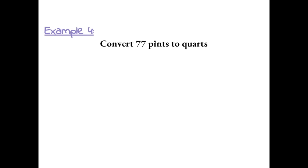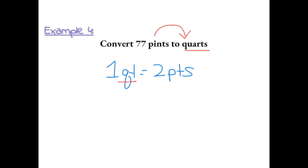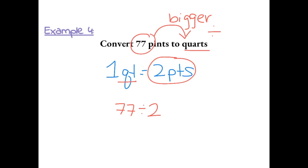Example 4: Convert 77 pints to quarts. We know that 1 quart is equal to 2 pints, so quarts is our bigger unit. We're going from a smaller unit to a bigger unit, so the operation we're going to use is division. We're going to take the unit we have, 77, and divide by what we're converting it to, which is 2 pints.